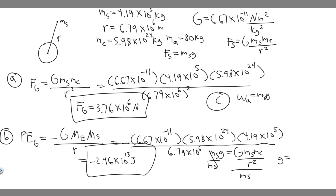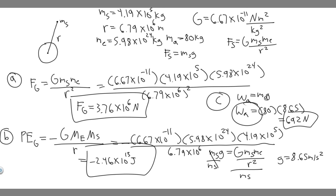Solving that gives g equals 8.65 meters per second squared. Keep in mind, on Earth it's normally 9.8, so even at that orbital distance it's not that much less. Now for weight: weight equals mass of astronaut times g, so 80 times 8.65 equals 692 newtons. So 692 newtons is the weight of the astronaut inside the station — that's your answer to C.